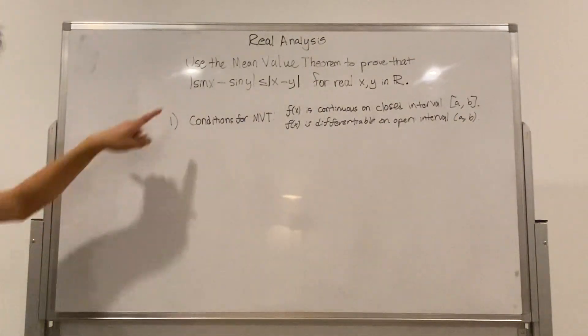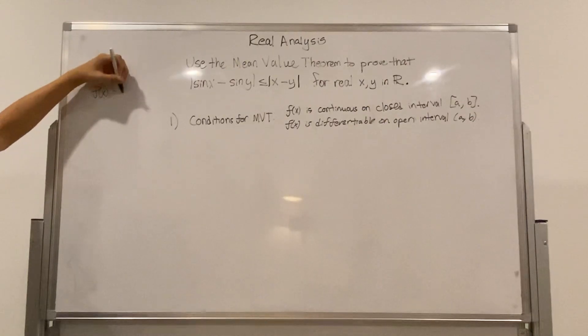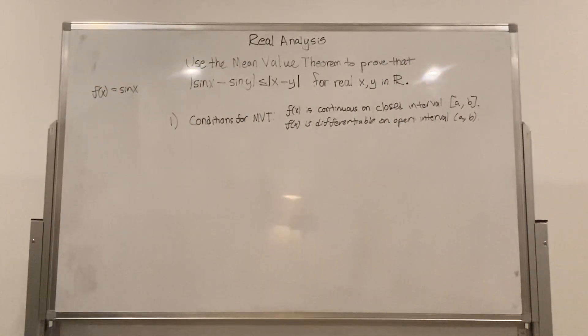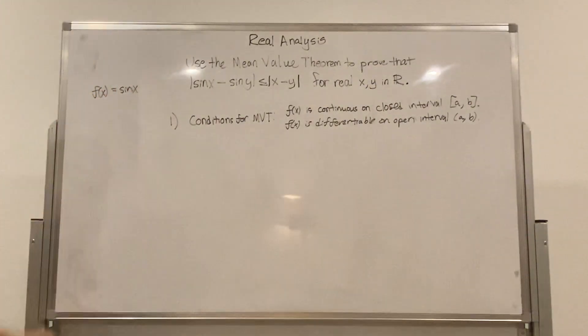So let's look at our function. Our function is f of x equals sine of x. We know that sine of x is continuous everywhere because it's just a wave that's going back and forward. It doesn't have any discontinuities or anything that would make it discontinuous.